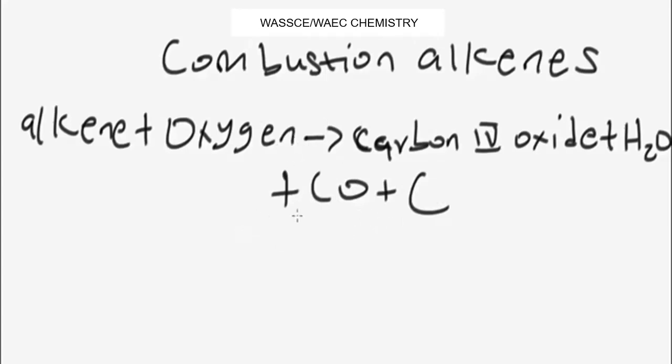So the products will be carbon dioxide CO2 plus water H2O. We also have carbon monoxide CO and carbon if the combustion is incomplete. Also, in the process of combustion, energy is released. When combustion is complete with excess oxygen, carbon dioxide and water are produced. When combustion is incomplete, carbon monoxide and carbon can also be produced.